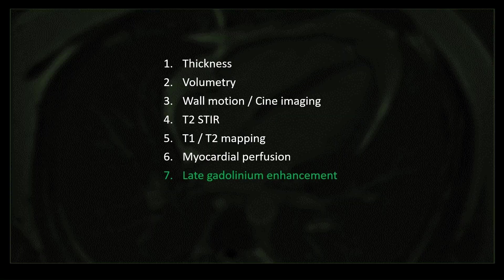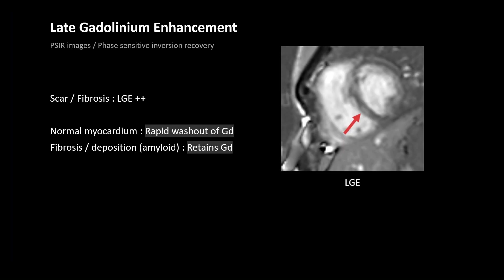Now we will talk about late gadolinium enhancement or LGE images. These are PSIR — phase-sensitive inversion recovery — sequences. Inversion recovery means we null the myocardium, so normally the entire myocardium is nulled out. If there is any gadolinium deposition, it is not nullified and appears as enhancement. The key concept is that normal myocardium shows rapid washout of gadolinium, whereas fibrosis or amyloid deposition retains contrast — so any fibrosis or scar will show LGE.